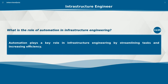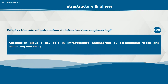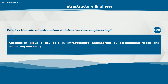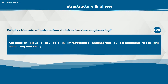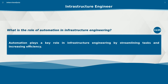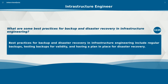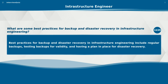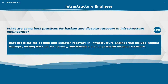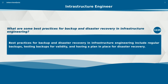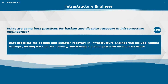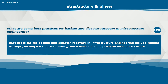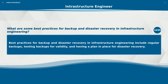What is the role of automation in infrastructure engineering? Automation plays a key role in infrastructure engineering by streamlining tasks and increasing efficiency. Best practices for backup and disaster recovery include regular backups, testing backups for validity, and having a plan in place for disaster recovery.